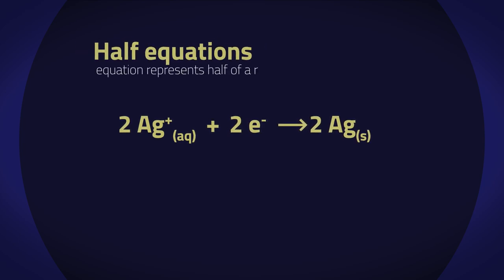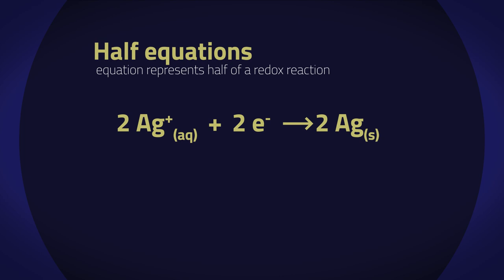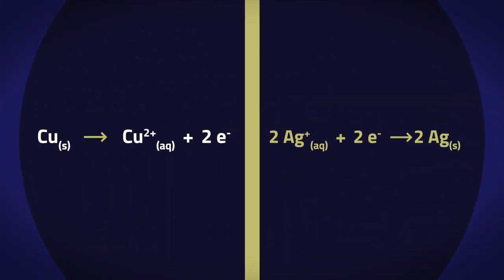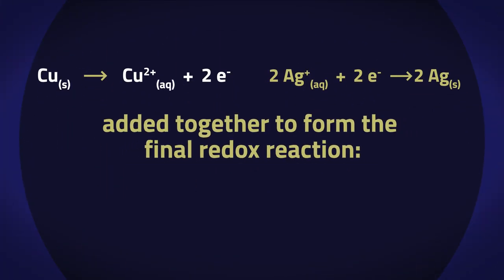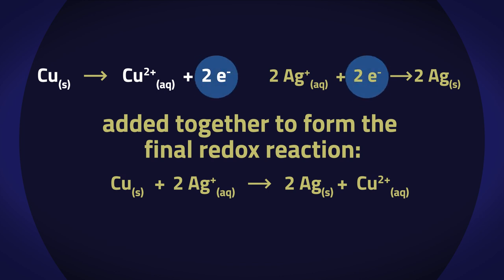These are called half equations because each equation represents half a redox reaction, either the reduction reaction or the oxidation reaction. When the two equations are added together to form the final redox reaction, you can see that everything including the number of electrons are balanced to reform the ionic equation. The electrons are equal on each side and can be removed.